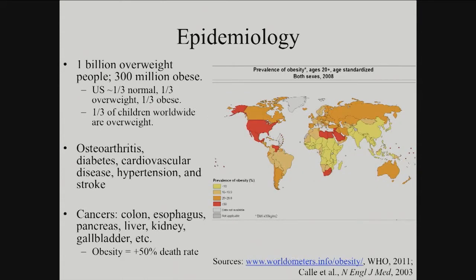There are currently probably as many if not more overweight and obese people in the world than there are malnourished people. We've actually passed that tipping point sometime in the 2000s. Over 1 billion people in the world are overweight. The figure for malnourished is probably under that — around 800 to 900 million. Over 300 million are obese.